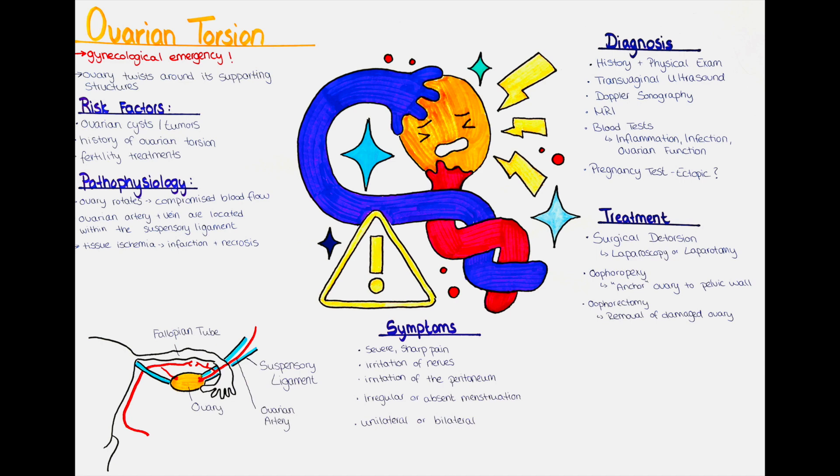A transvaginal ultrasound is often the first imaging modality we use to evaluate ovarian torsion. It helps to visualize the ovaries, to identify any torsion related changes and to assess the blood flow to the ovaries. A Doppler ultrasound can help us to detect reduced or absent blood flow to the affected ovary.